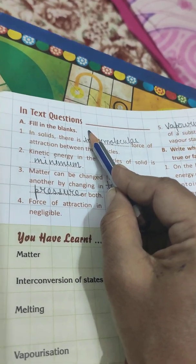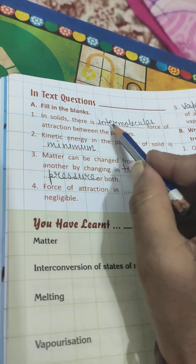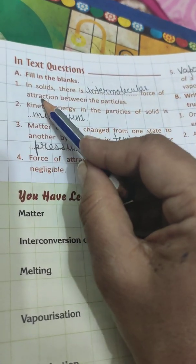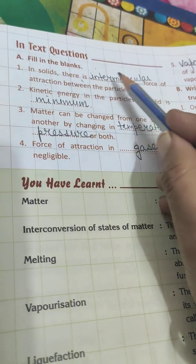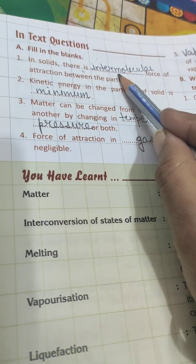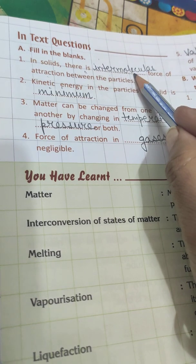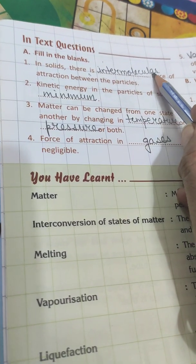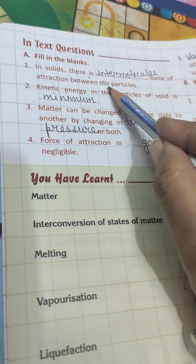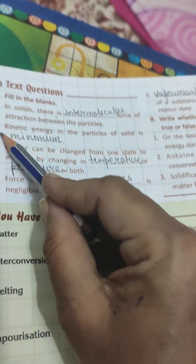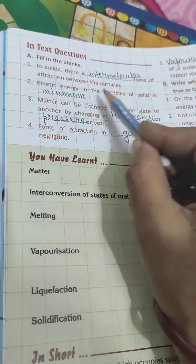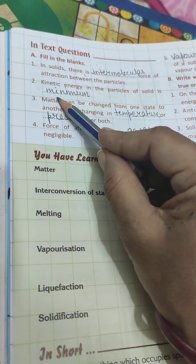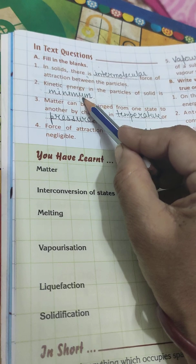Be ready with your pencil and start writing the answers. In solids, there is intermolecular (I-N-T-E-R-M-O-L-E-C-U-L-A-R) force of attraction between the particles. Second, kinetic energy in the particles of solid is minimum (M-I-N-I-M-U-M).